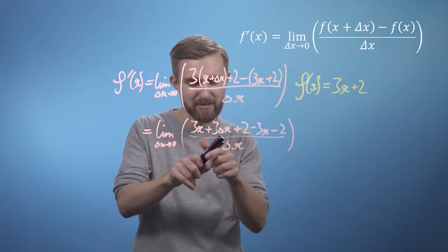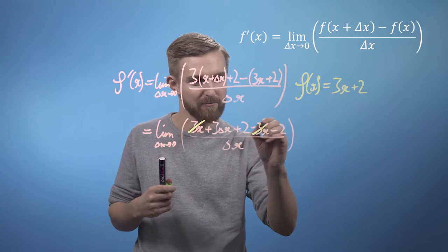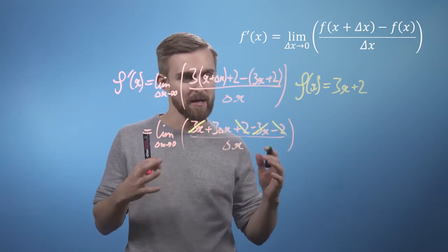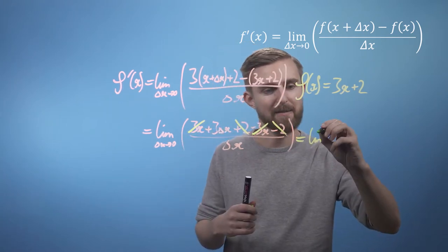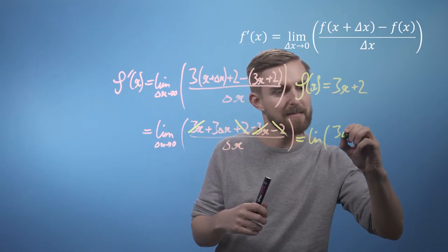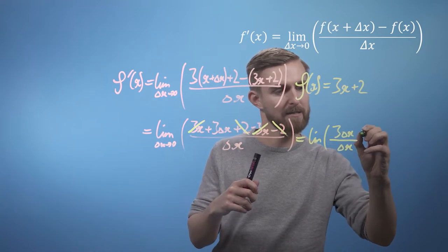And now we can look at this and say some of the terms are going to cancel. So this 3x here goes with this 3x here, and this plus 2 here goes with this minus 2 here. So we can keep going with this line and say, well, the limit, and it's going to be 3 delta x all over delta x.